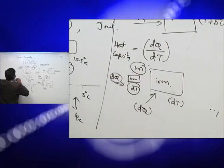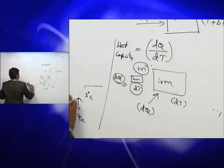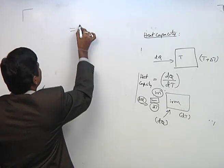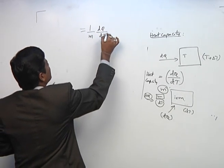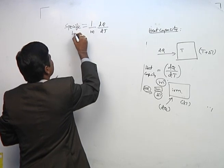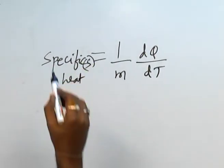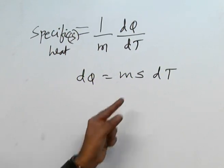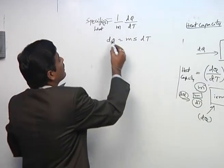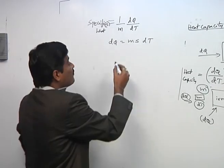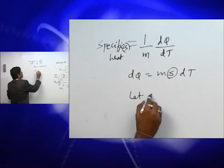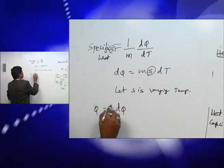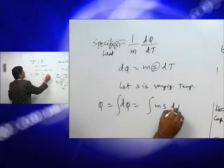Hence, we define another factor: heat per unit mass, which we call specific heat. If specific heat S is constant, we write DQ equals M times S times DT. If S varies with temperature, then we write DQ as the integral of M times S times DT from T1 to T2.